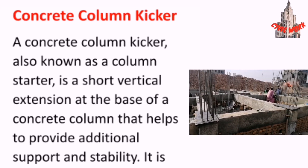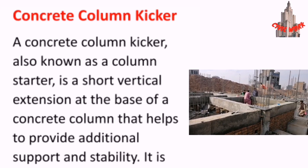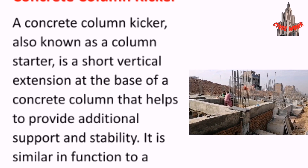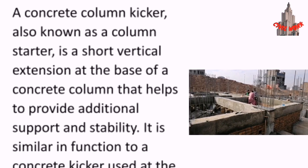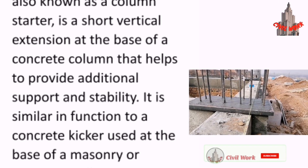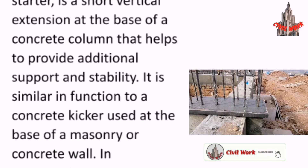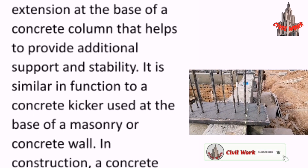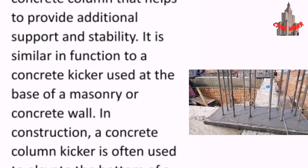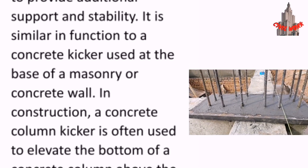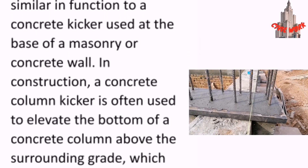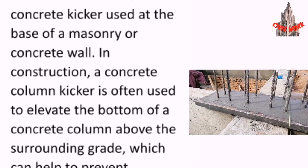A concrete column kicker, also known as a column strutter, is a short vertical extension at the base of a concrete column that helps to provide additional support and stability. It is similar in function to a concrete kicker used at the base of a masonry or concrete wall.